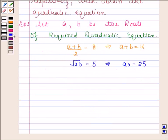We know that quadratic equation is of the form X squared minus sum of the roots into X plus product of roots is equal to 0.